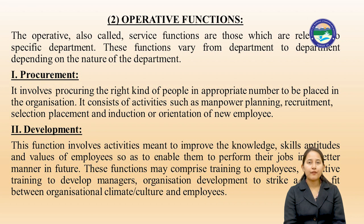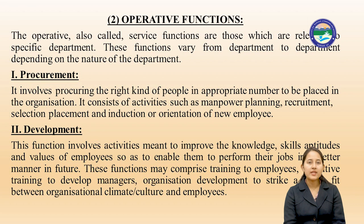Now the next category is Operative Functions, also called service functions, which are relevant to specific departments and vary depending on the nature of the department. The operative functions of HRM relate to ensuring right people for right jobs at right times. These functions include procurement, development, compensation, and maintenance. Procurement involves procuring the right kind of people in appropriate numbers for the organization, consisting of activities such as manpower planning, recruitment, selection, placement, and induction and orientation of new employees.